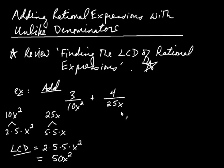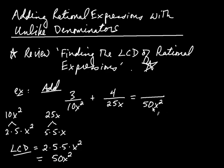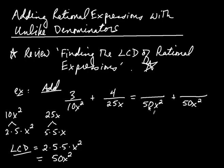Now what we're going to do with the LCD, just like when you add fractions together, is convert these expressions to have this denominator. So it's going to be something over 50x squared for the first expression, plus something over 50x squared for the second. You have to convert 10x squared into 50x squared. You're probably thinking, easy — just multiply by 5 to get that. And that's true, but I want to show you another way that's useful when problems get more complicated.